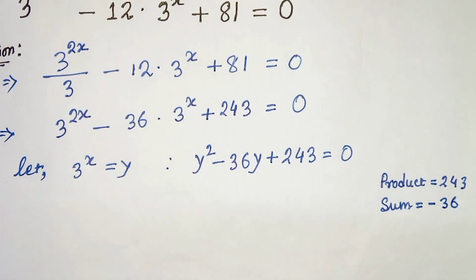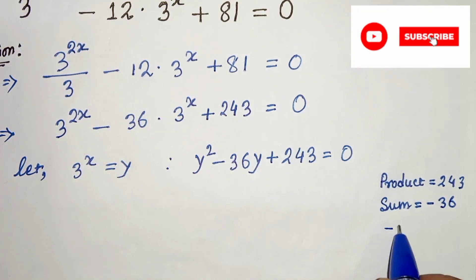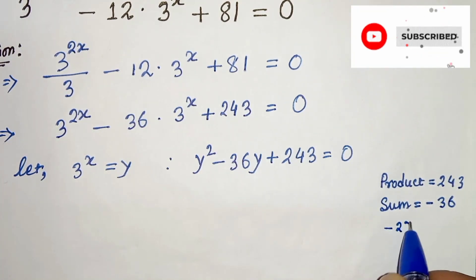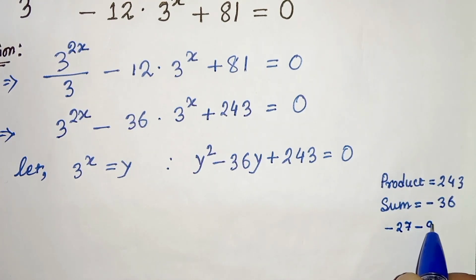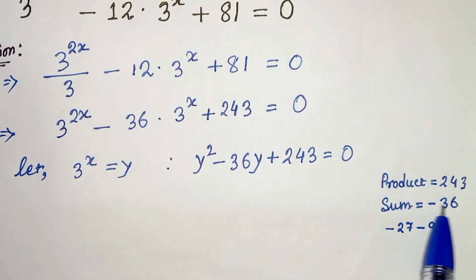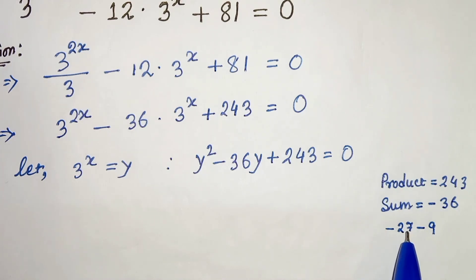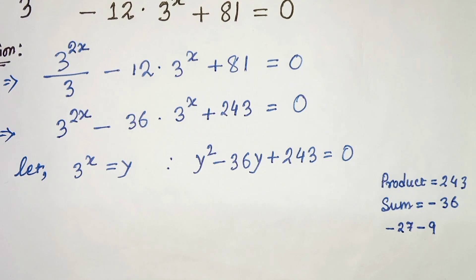So we will take minus 27 and minus 9, because minus 27 minus 9 is minus 36, and minus 27 times minus 9 is 243.